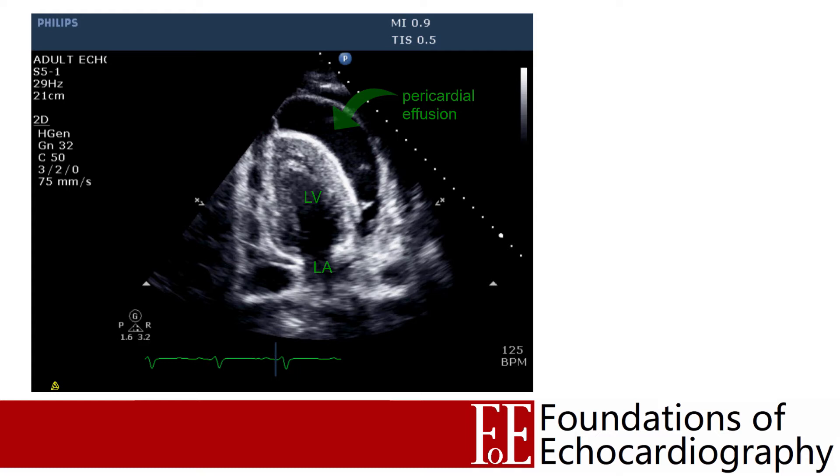Whenever we're reporting an echo we need to describe physical findings but also consider the hemodynamic consequence of any abnormalities. Pericardial effusions are no different — every time you identify an effusion you must comment on what impact you think it's having on the patient's hemodynamics. If you report the presence of an effusion you will be asked if it is causing cardiac tamponade, so we need some way to address that question.